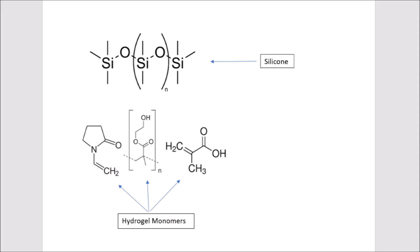The top molecule is silicone rubber, the bottom left molecule is N-Vinyl pyrrolidine, the bottom middle is Poly-2-Hydroxyethylmethacrylate, and the bottom right is Methacrylic acid.